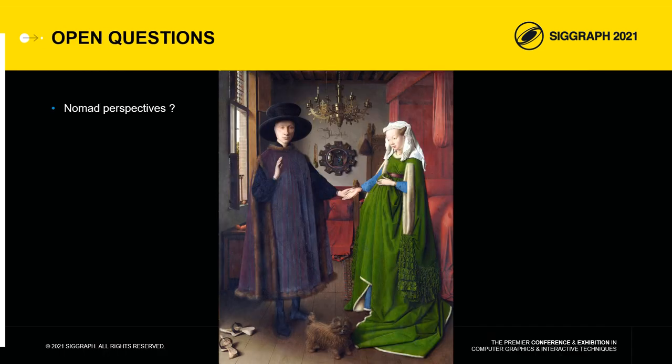These results leave several questions open. The first question is obviously: why did Van Eyck design this machine? Did he want to paint nomadic perspectives? This seems unlikely. What sense would it make to visit a painting moving along these four points?